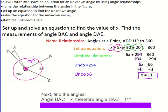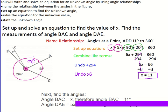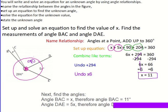For angle DAE, that is 5x. So what you're going to do is plug in x for 11. So you have 5 times 11, which is 55 degrees.